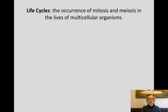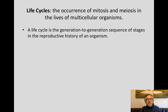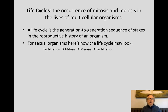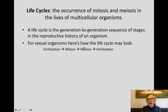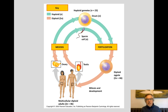This leads us to the idea of the life cycle, which is the generation-to-generation sequence of stages in the reproductive history of an organism. For sexual organisms, the life cycle looks like this: fertilization forms a zygote, then that single cell develops into a mature individual by mitosis. In the gonads, meiosis produces gametes, fertilization occurs, and the cycle begins anew. The gametes fuse at fertilization, and then we have a mitotic sequence until they're sexually mature again.